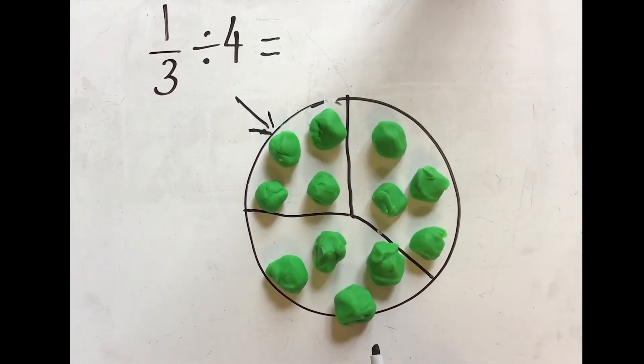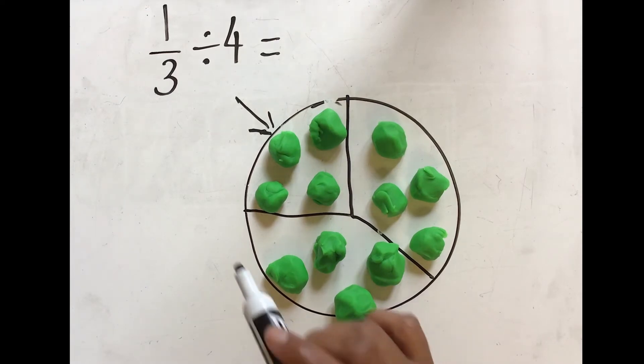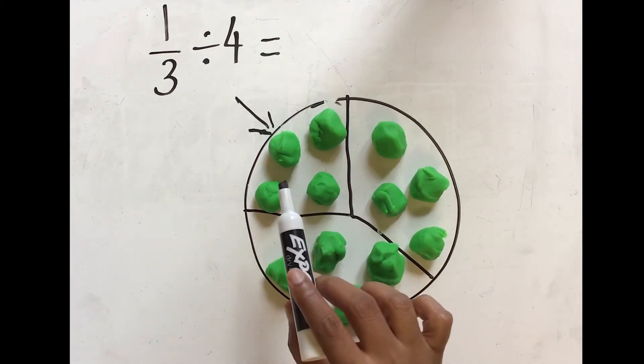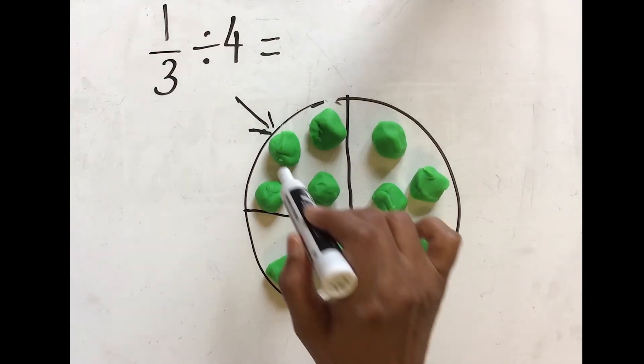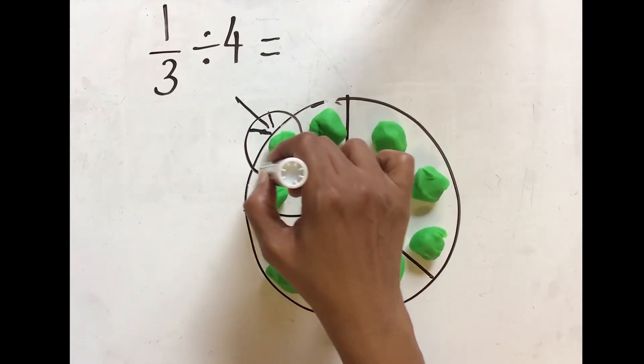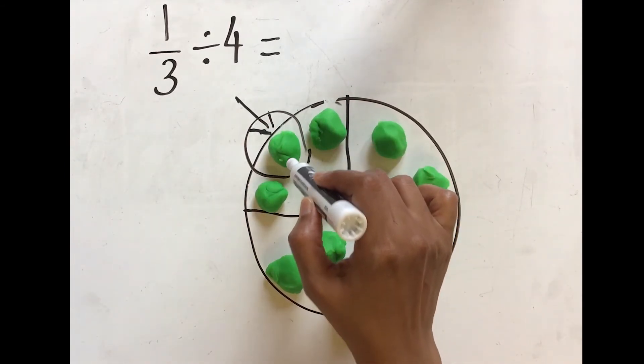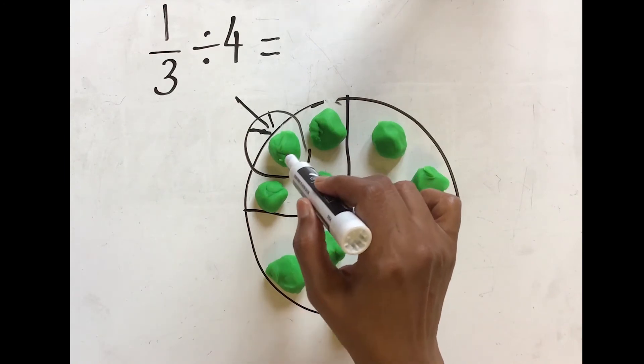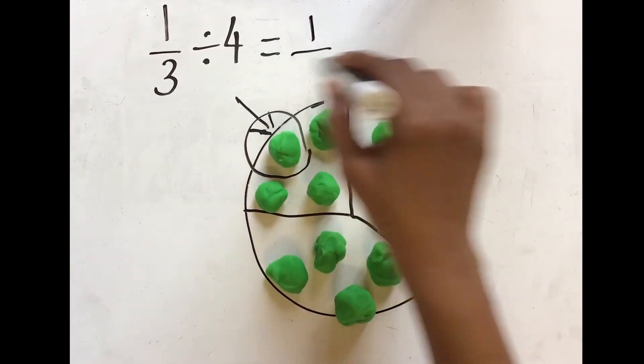Now you can see there are 12 smaller pieces. However, if you take the 1/3 and split it into 4 equal parts, each portion, which is in this case, let's focus on this, each smaller portion is nothing but 1 of the 12 pieces.